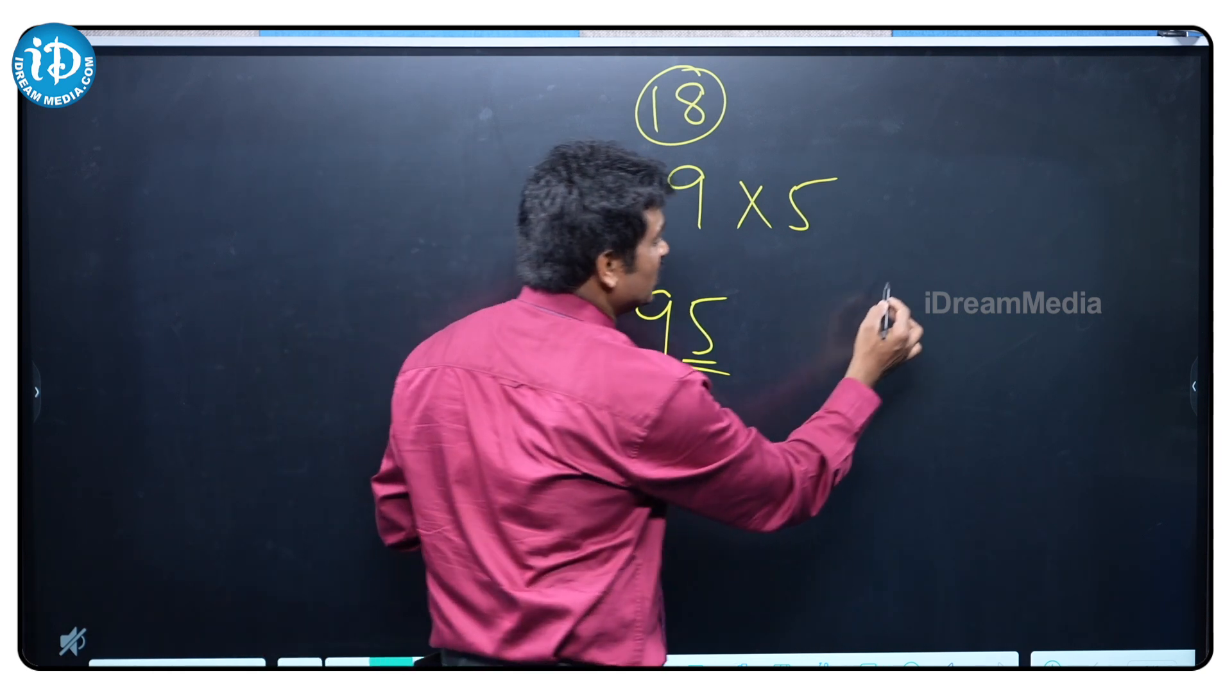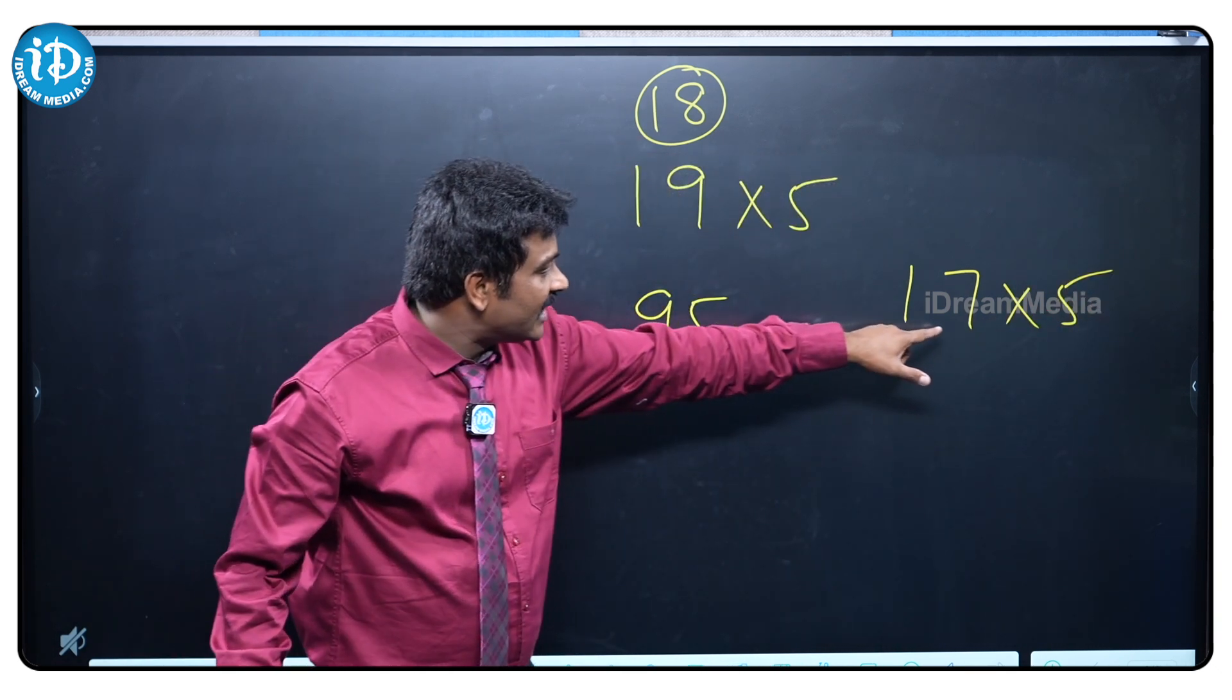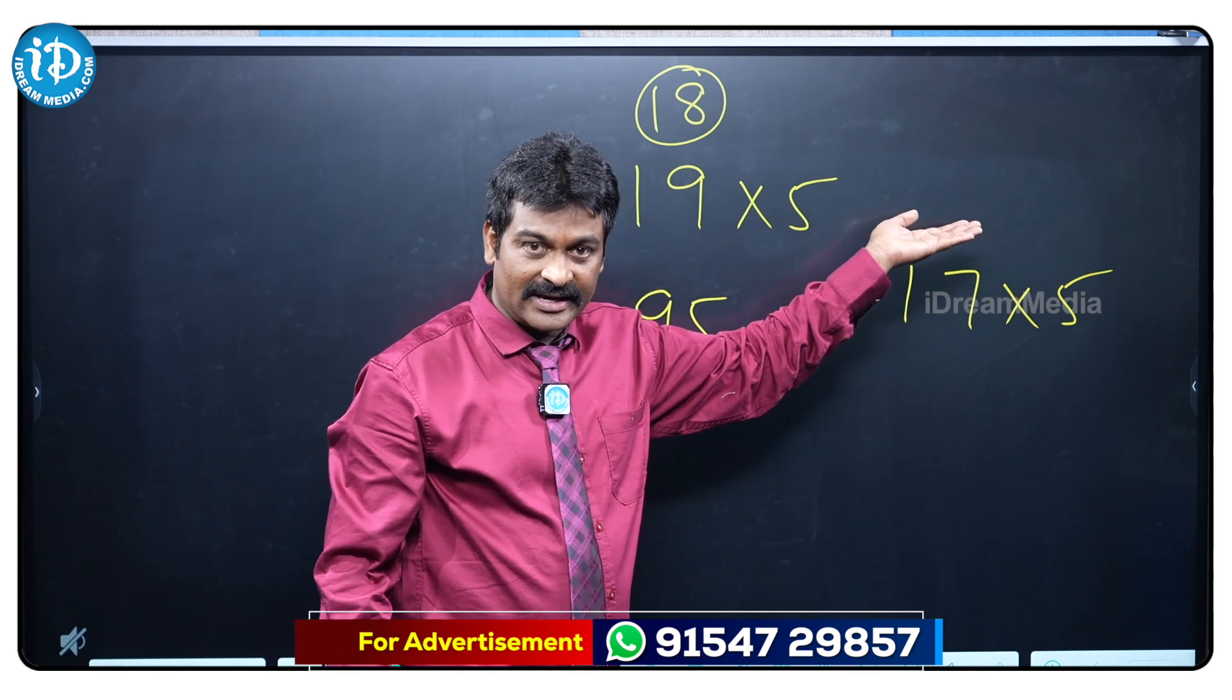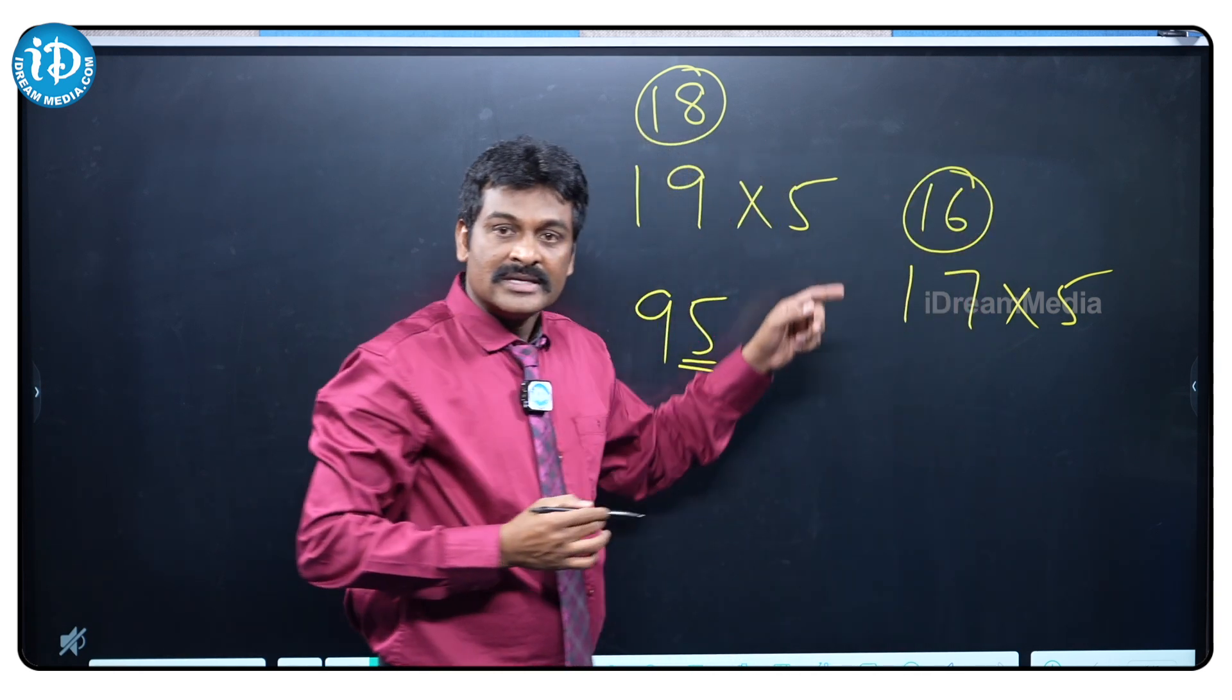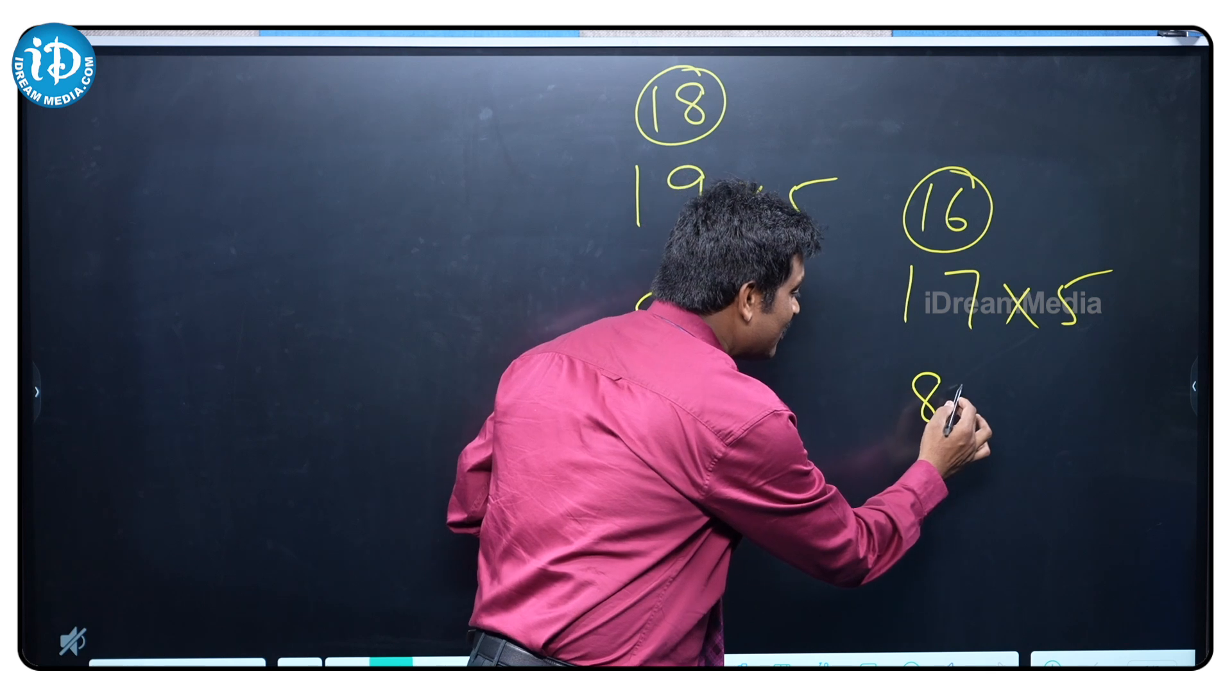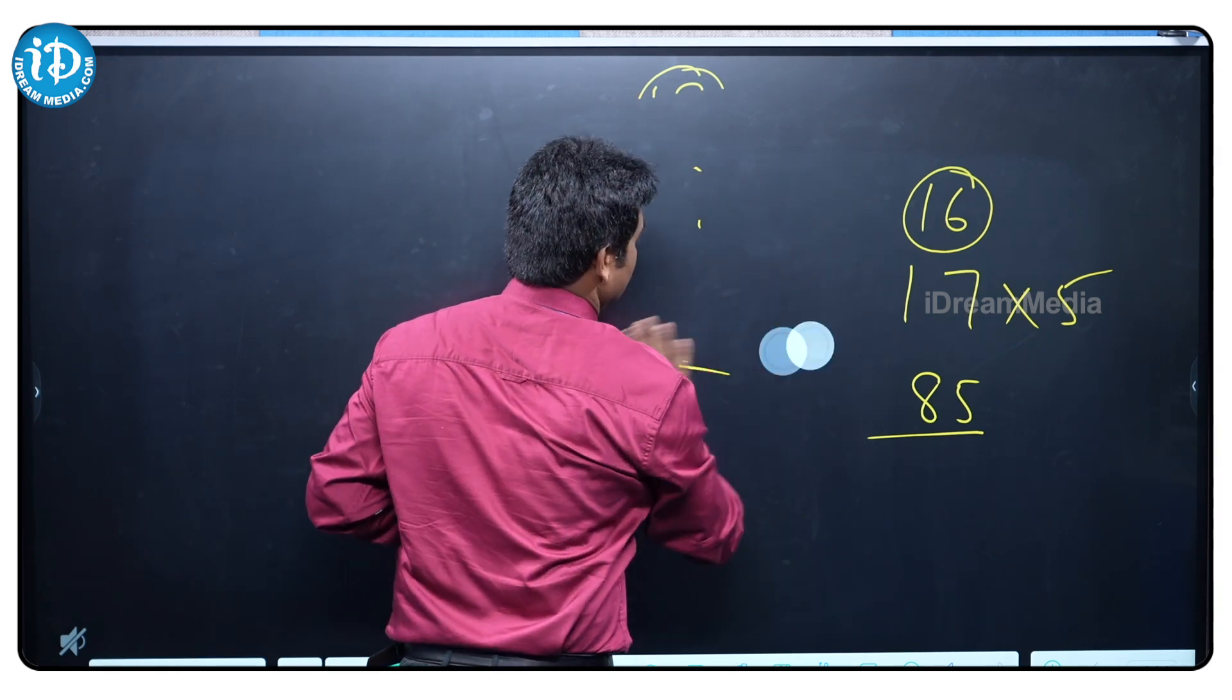The same way, suppose you take one more example, 17 into 5. 17 is also odd number. In this particular case, 17 is odd number, so you need to take the below number of 17, 16 take immediately. 16 half, what is the half of 16? 8. Attach a 5, that's it. Your answer is 85. We do like this in Vedic math. I think everybody understood this concept.